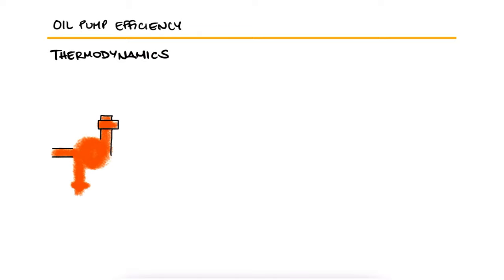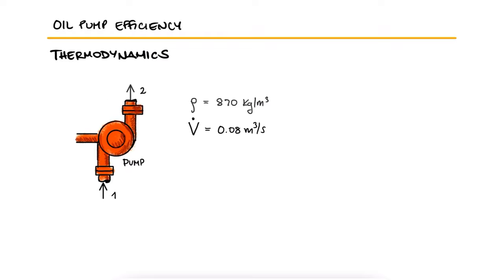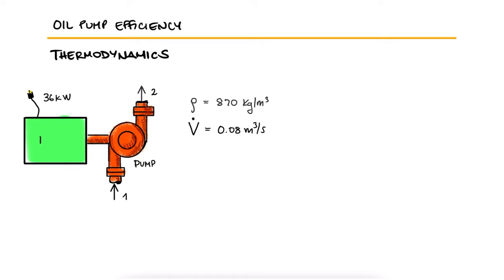Oil with a density of 870 kilograms per meter cubed is being pumped at a rate of 0.08 cubic meters per second by drawing 36 kilowatts of electric power into its electric motor.